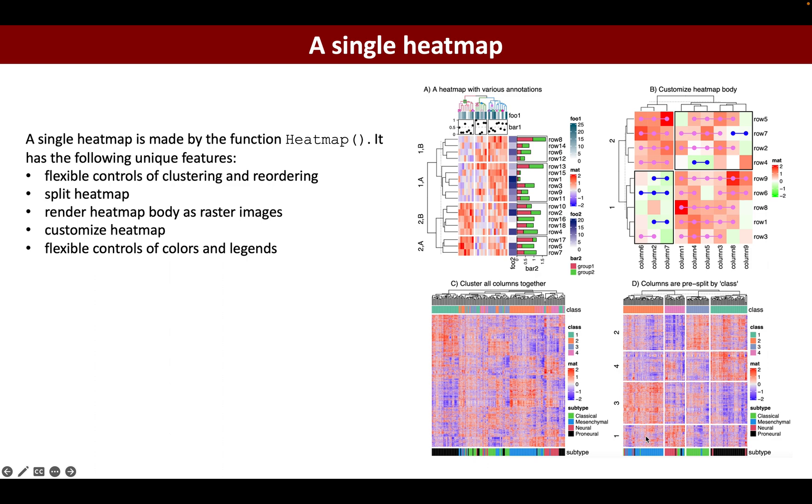The second unique feature is that it supports splitting the heatmap by rows or by columns. This is a useful feature for heatmap visualization because it helps to highlight these group-wise patterns very well.